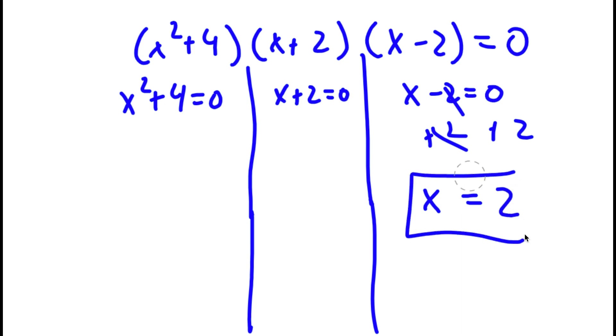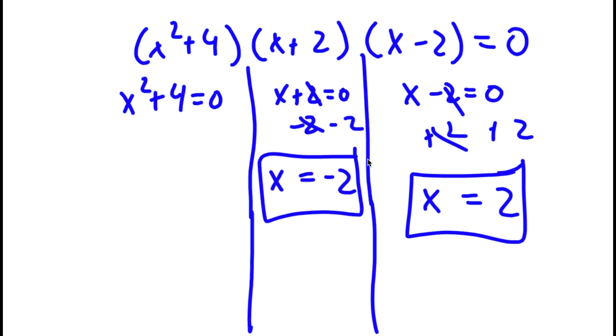For x plus 2 equals 0, I subtract 2 on both sides, and I get x is equal to negative 2. This is my second solution.